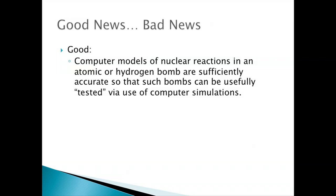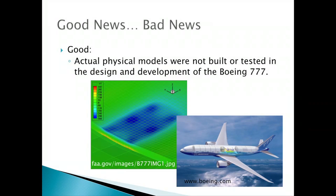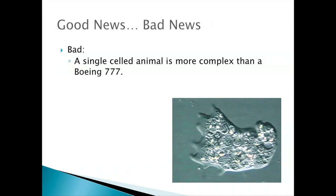Computer models of nuclear reactions are now accurate enough that atomic bombs can be tested via simulation — everyone would prefer that. The Boeing 777 was entirely designed and built using computer simulation before any physical model was constructed — simulating even the landing gear impact on airport concrete. The sobering bad news: a single-celled animal is more complex than a 777, which tells you what we're up against when trying to simulate the human body or congenital heart disease.